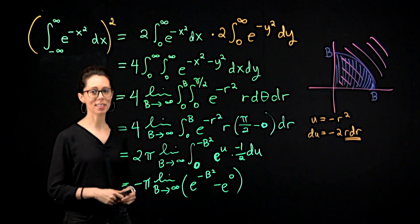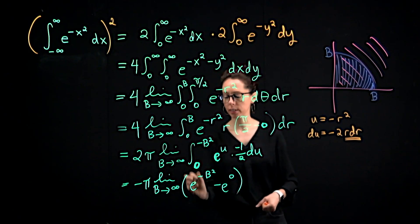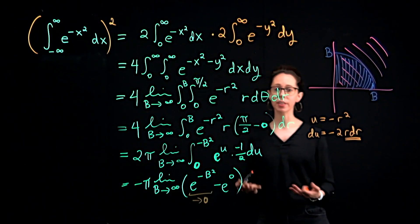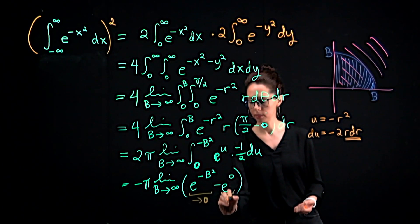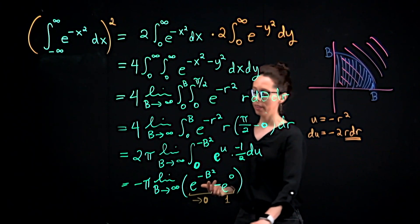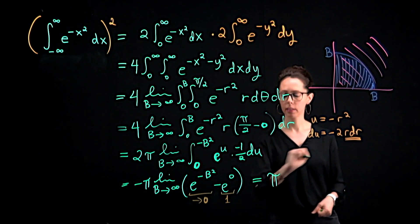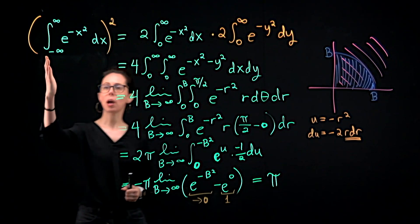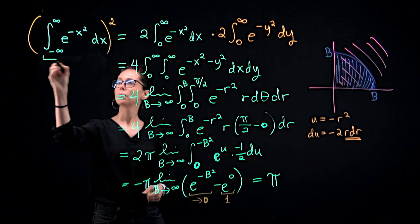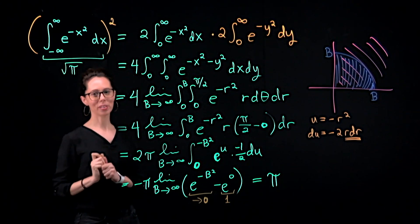To finish this computation, we just have to recognize that as B goes to infinity, negative B squared goes to negative infinity, which means this first exponential expression is like exponential decay down to zero. And then for the second term, e to the zero is one. So that overall this expression is negative one. So the limit as B goes to infinity of this is negative one times negative pi gives us pi, which means going back to our original computation, the integral from negative infinity to infinity of e to the negative x squared dx is the square root of pi. I hope you enjoyed working through this computation. Thank you for your attention.